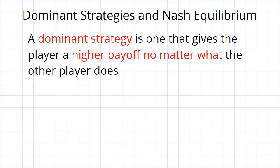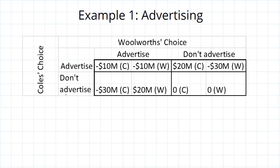To demonstrate this, let us go back to the example from the previous video of Coles and Woolies choosing between advertising and not advertising. Let's look at Coles and see if they have a dominant strategy — do they have a strategy that will always be better for them? To see if this is the case, we simply need to look at both of the choices Woolies can make and see in each individual case what is the best strategy for Coles.